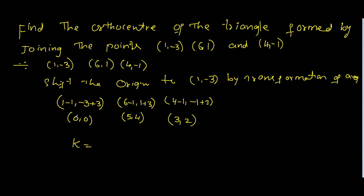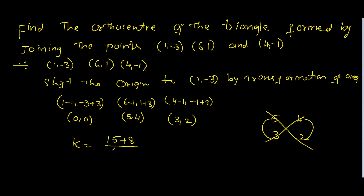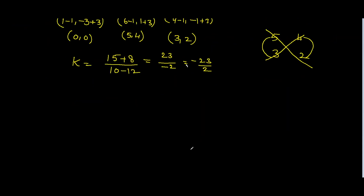k is equal to — write down the two points: first point (0, 0), and the other points (5, 4) and (3, 2). Multiplying: 5 into 3 is 15, plus 4 into 2 is 8, by the determinant: 5 into 2 is 10, minus 3 into 4 is 12, that is 10 minus 12, that is minus 2. So k is equal to 23 divided by minus 2, that is minus 23/2.